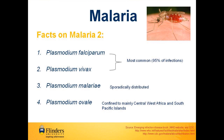There are four common species of malaria that infect humans. These are Plasmodium falciparum, which causes the majority of deaths; Plasmodium vivax, which is the next most common species; Plasmodium malariae, which is sporadically distributed in endemic areas; and Plasmodium ovale.